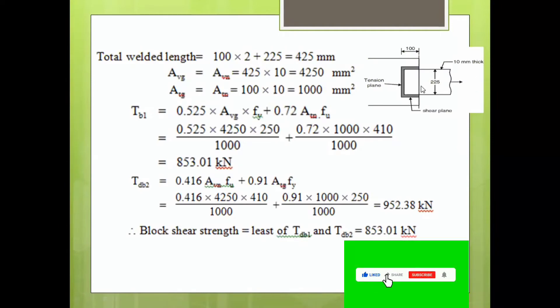Our first step will be calculating the total welded length. If you see here, this weld length is 100, two times. So this is 100 into 2, plus the vertical length which is 225. Therefore, total welded length is 425 mm.